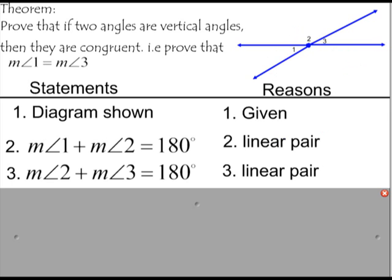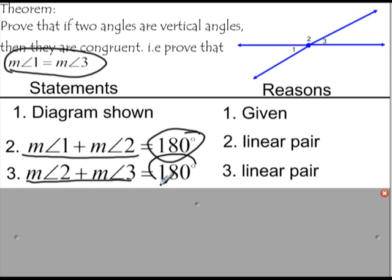So now I'm trying to connect back to what I'm trying to prove. I'm trying to prove that 1 and 3 are equal. I've got these two equations with 1 and 3 in them, so I need to link them together somehow. And what I notice is that this equals 180 degrees, and this also equals 180 degrees. If two different things are both equal to the same thing, they have to be equal to each other.